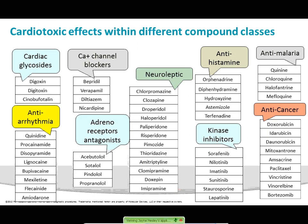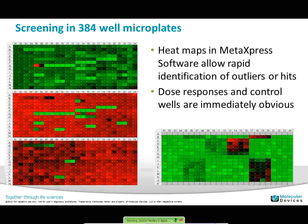We purchased a targeted compound library for cardiotoxic effects and tested those in 384-well plates using these induced pluripotent stem cells. Heat maps from MetaXpress software allow you to quickly see where you have outliers — potential hits. The compounds were run in duplicate, and you can view different parameters: nuclear size, mitochondrial membrane potential, cell density, and so on. Dose-response curves are readily apparent in the heat maps — for example, columns 13 through 16 run in quadruplicate, starting at a high level at top and decreasing going down.